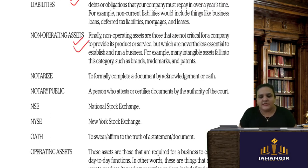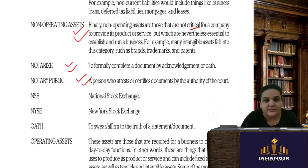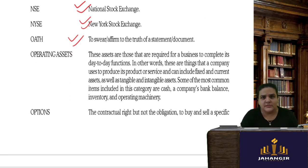Non-current liabilities are those liabilities which are long-term in nature — loans, deferred tax liability, mortgages, leases. Non-operating assets are those not critical for the company's products and services but still shown in books — for example, advertisement expense, brands, or trademarks sometimes shown as assets. Notarize is a formal procedure to complete a document acknowledged by oath — a notary public certifies and attests documents by authority of the court. NSE is National Stock Exchange; NYSE is New York Stock Exchange.